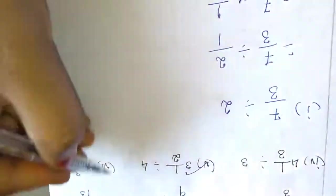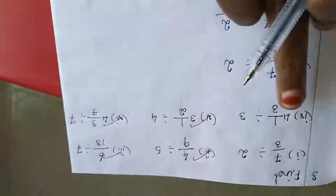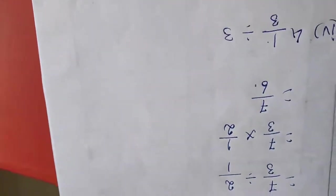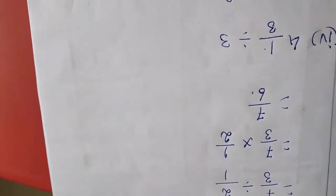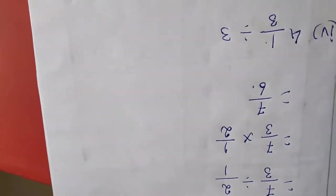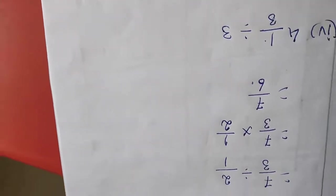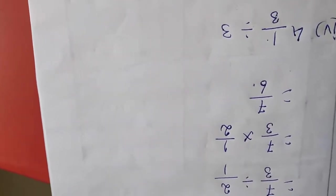The fifth and sixth sums are homework for you, similar to the fourth sum. The fourth exercise also has all division sums — do those in your homework. Thank you dears, up to this the exercise is over. Do the homework.